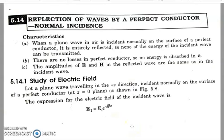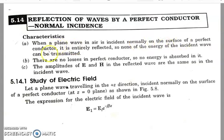Hello students, today we are going to cover the topic: reflection of waves by a perfect conductor, normal incidence case. We study how the wave behaves when it comes normally on any material made up of a perfect conductor. When a plane wave in air is incident normally on the surface of a perfect conductor, it is entirely reflected back, so none of the energy of the incident wave can be transmitted. No wave is transmitted to the other side of the perfect conductor.